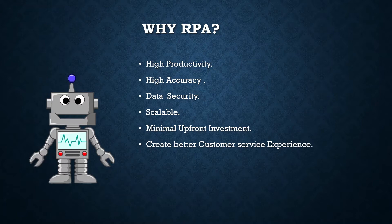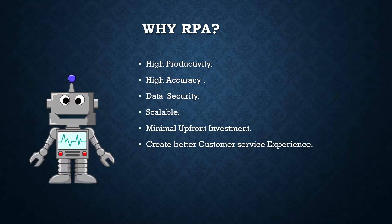The second reason is high accuracy. When a human works, there is always a possibility of human error. When it comes to a bot, it is always following the instructions which we have provided, so the accuracy is very high with zero errors. The third reason is data security. Some processes or information are very confidential and cannot be shared with everyone. Such data can be processed through bots, ensuring that a limited number of people are aware of it, keeping it highly secure.